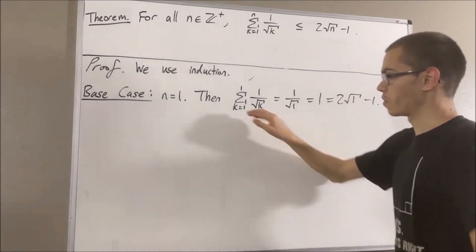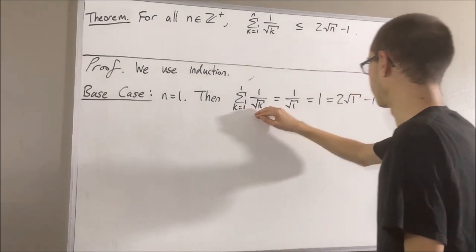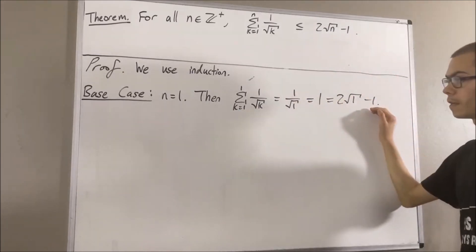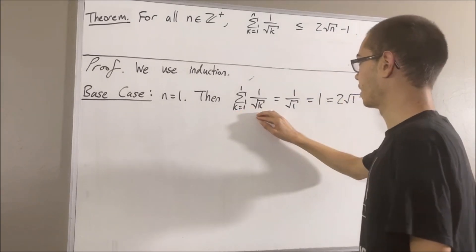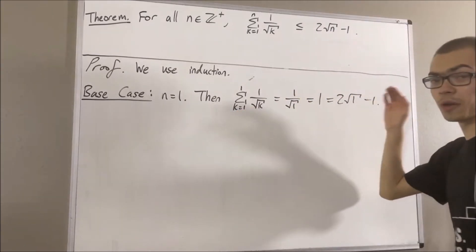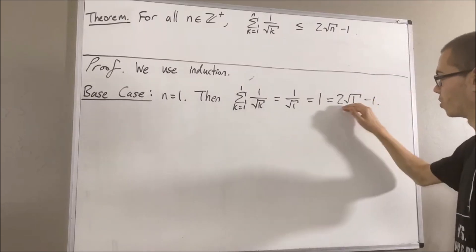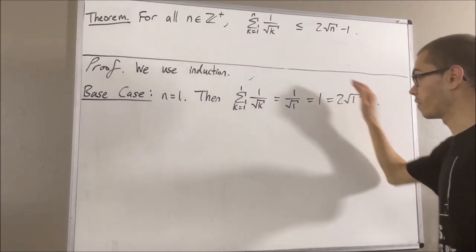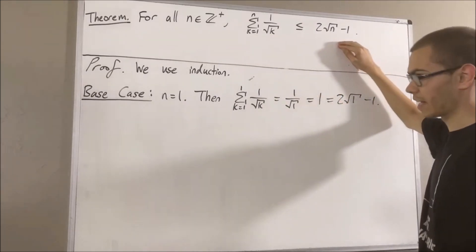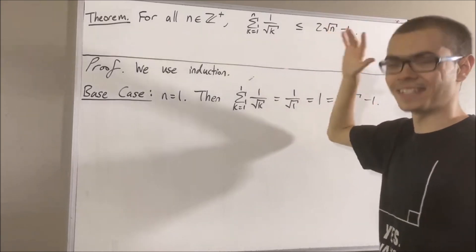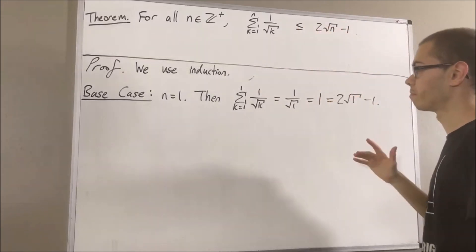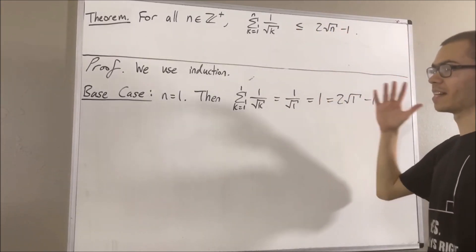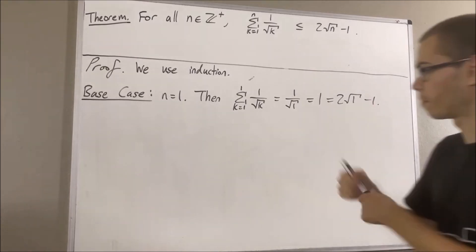And 1 is equal to 2 square root of 1 minus 1. So we've shown that this side is equal to this side, and therefore this side is less than or equal to this side. So we've shown that this is true in the case where n equals 1, which completes the base case.